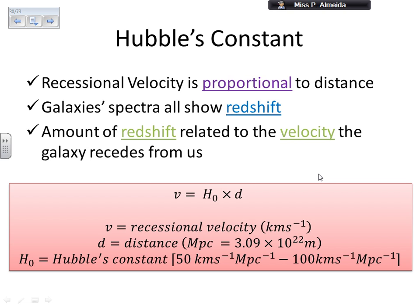Bigger the distance, bigger the velocity that the galaxies move away from us. The galaxy spectra also show redshift. Again, Andromeda is quite an exception because it's in a route of collision, so it's moving towards us, so it shows blueshift. The amount of redshift is related to the velocity that the galaxy recedes from us.